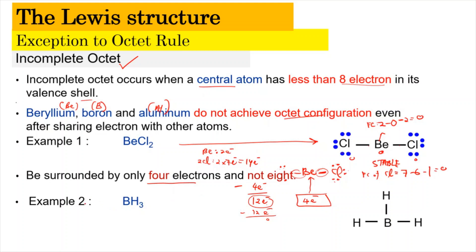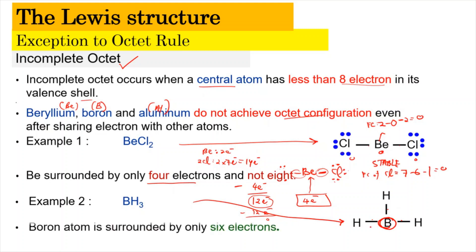For example number 2, if we draw the Lewis structure of boron trihydride (BH3), we get a structure where the central atom boron has only 2, 4, 6 electrons — instead of 8. However, they are still stable. This is another example of an element that follows the incomplete octet.